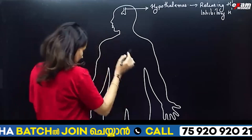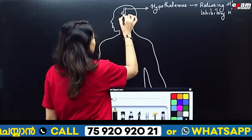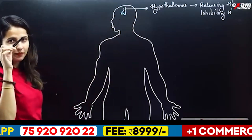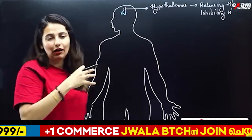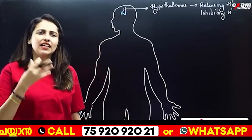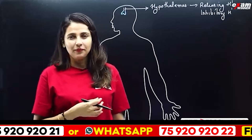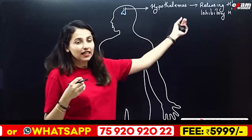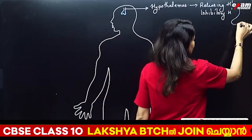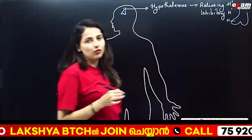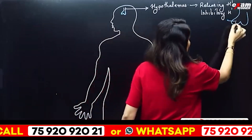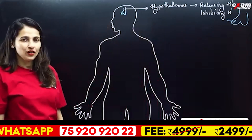The hypothalamus puts instructions to the pituitary. The pituitary gland receives those instructions. The anterior lobe of the pituitary is involved in secretion.